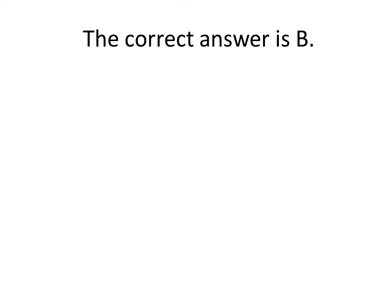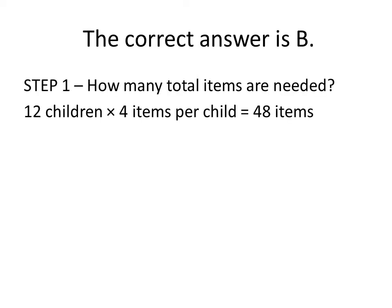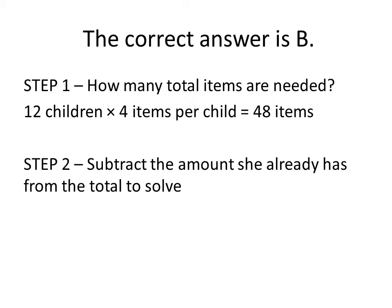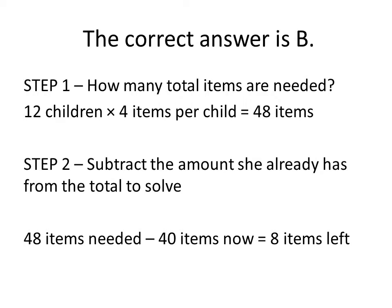For the problem we've just seen, the correct answer is B. For step one, how many total items are needed? 12 children times 4 items per child equals 48 items altogether. For step two, you need to take the total she needs and subtract the amount she already has. So 48 items needed minus the 40 items she's got now equals 8 items that she needs to buy.